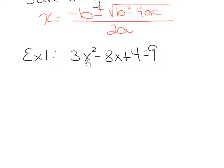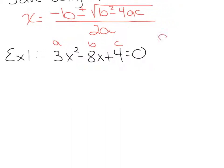Example 1 says to solve using the quadratic formula: 3x² minus 8x plus 4 equals 0. The first thing you want to make sure when solving a quadratic equation using the quadratic formula — just like when factoring — is that your equation equals 0 and is in standard form, meaning descending order: x squared term, then x term, then constant. The coefficients define A, B, and C. So A equals 3, B equals negative 8, and C equals 4.